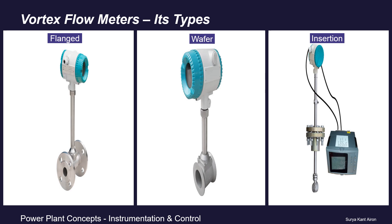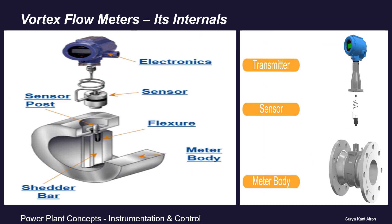A vortex flow meter looks like this as shown in the picture. The design and process connections can vary from manufacturer to manufacturer. It could be either a flange type connection as shown in the first picture, or it could be a wafer type — sandwiched between the flanges of the pipeline itself.